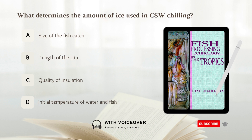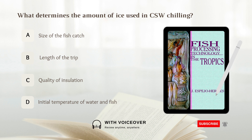What determines the amount of ice used in chilled seawater chilling? A. Size of the fish catch. B. Length of the trip. C. Quality of insulation. D. Initial temperature of water and fish.